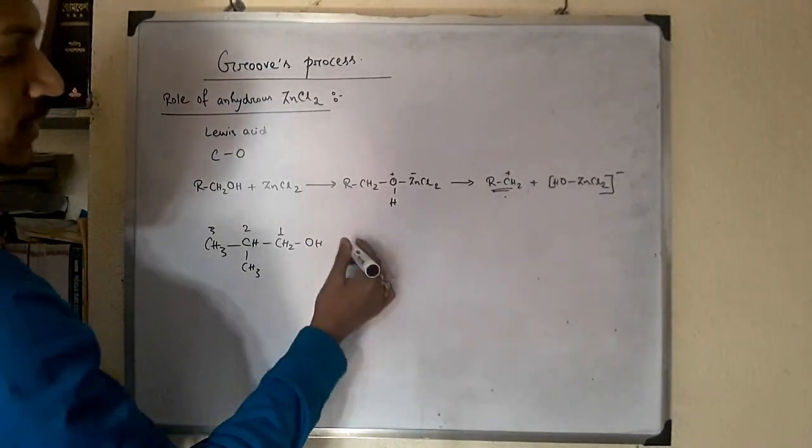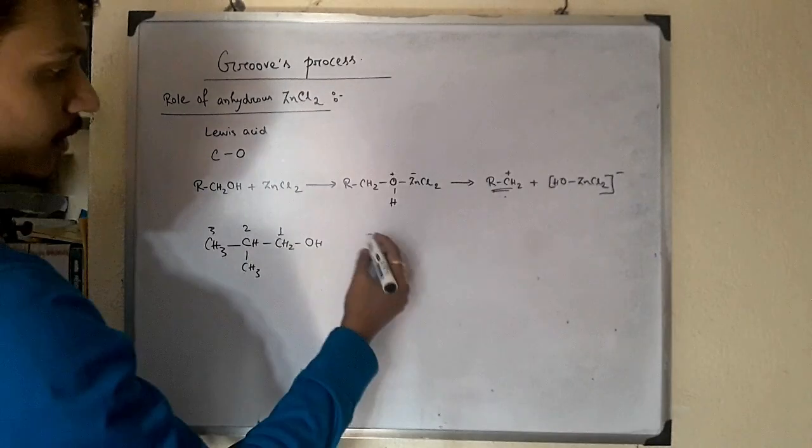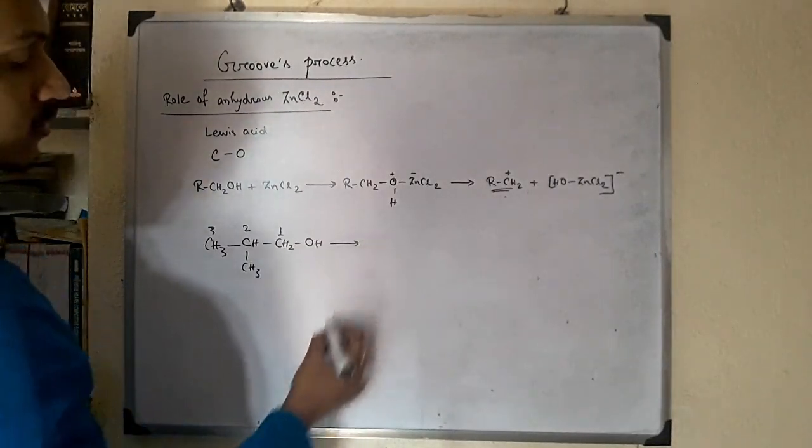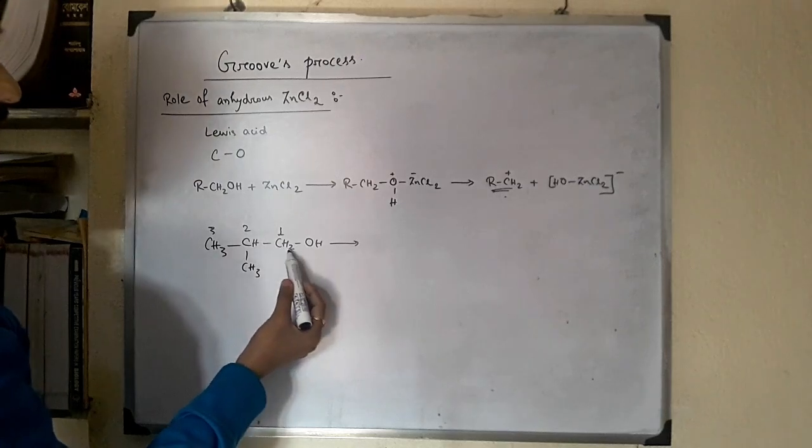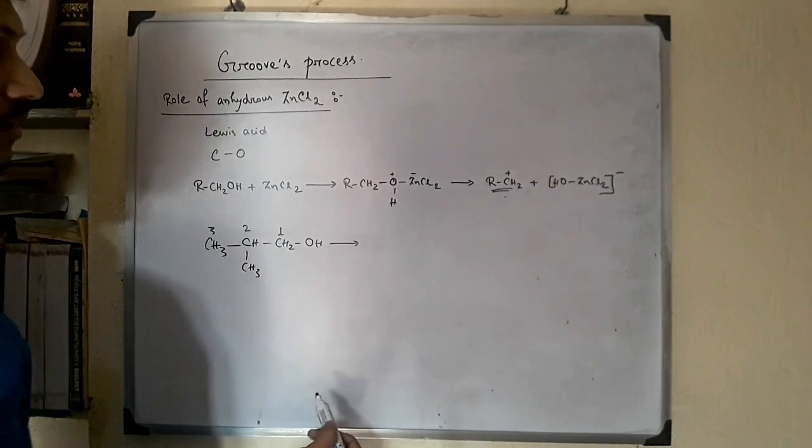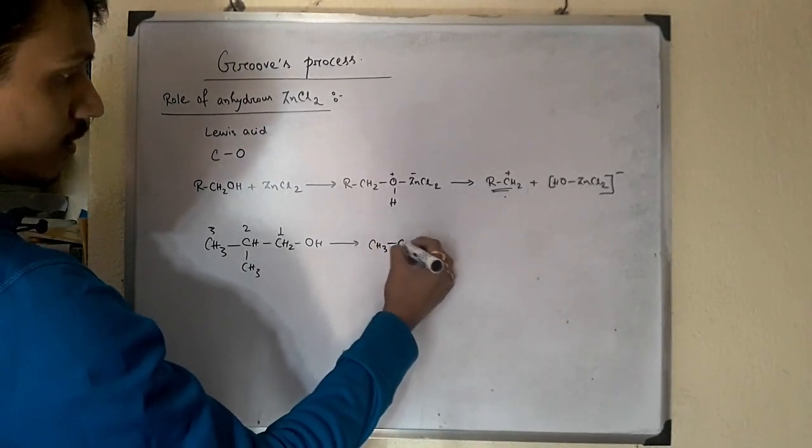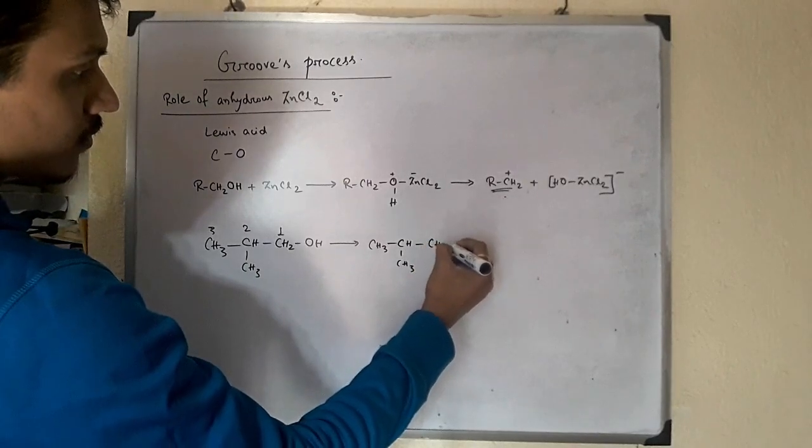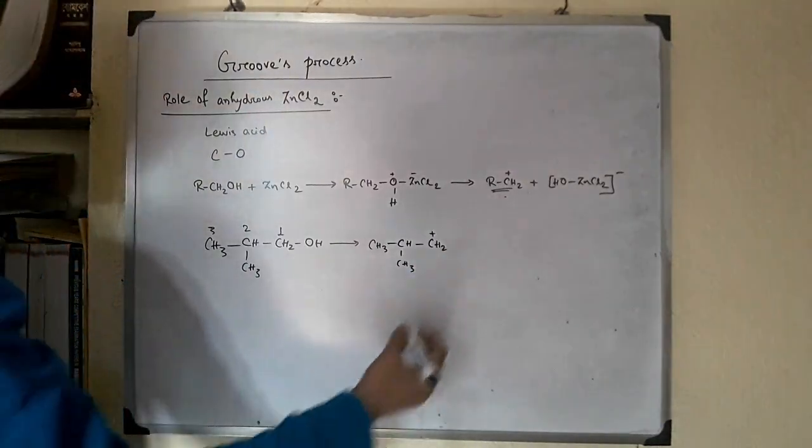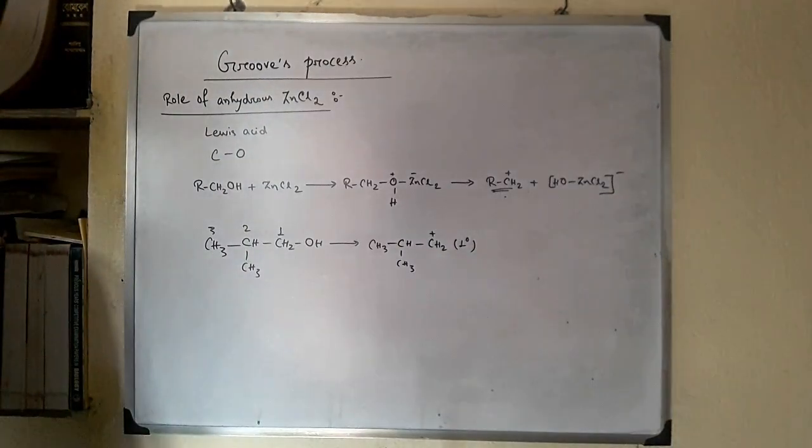This alcohol reacts with HCl and anhydrous zinc chloride. First, zinc chloride coordinates with the oxygen atom and the bond between C and O becomes weak. As a result, carbocation is formed. But this is a primary carbocation, which is least stable.